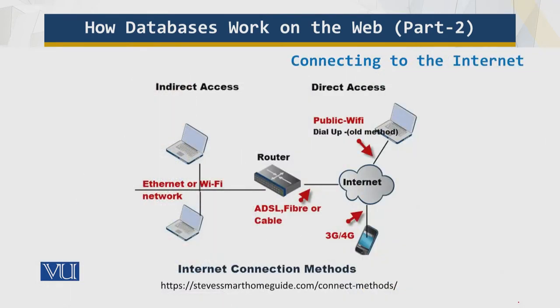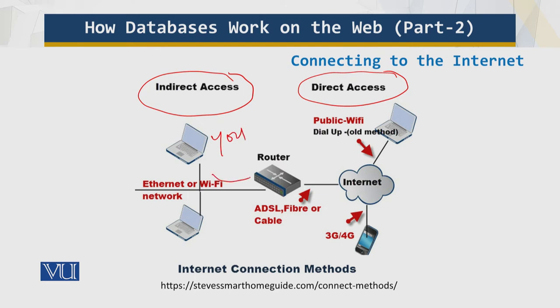As you can see on your screen, we have indirect access and we have direct access. In the indirect access, this is you, and you are going through this router, and this router is physically connected to the internet. That physical connection is using a copper wire pair, over a fiber, or over a cable TV, depending upon what is available in your area. This is the indirect access.